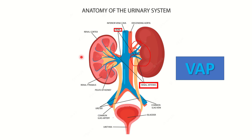The mnemonic here is VAP: V for vein (renal vein), A for artery (renal artery), and P for pelvis (renal pelvis). Sometimes it is also remembered as VAV — vein, artery, and ureter. So from anterior to posterior, the order is: renal vein, renal artery, and renal pelvis.